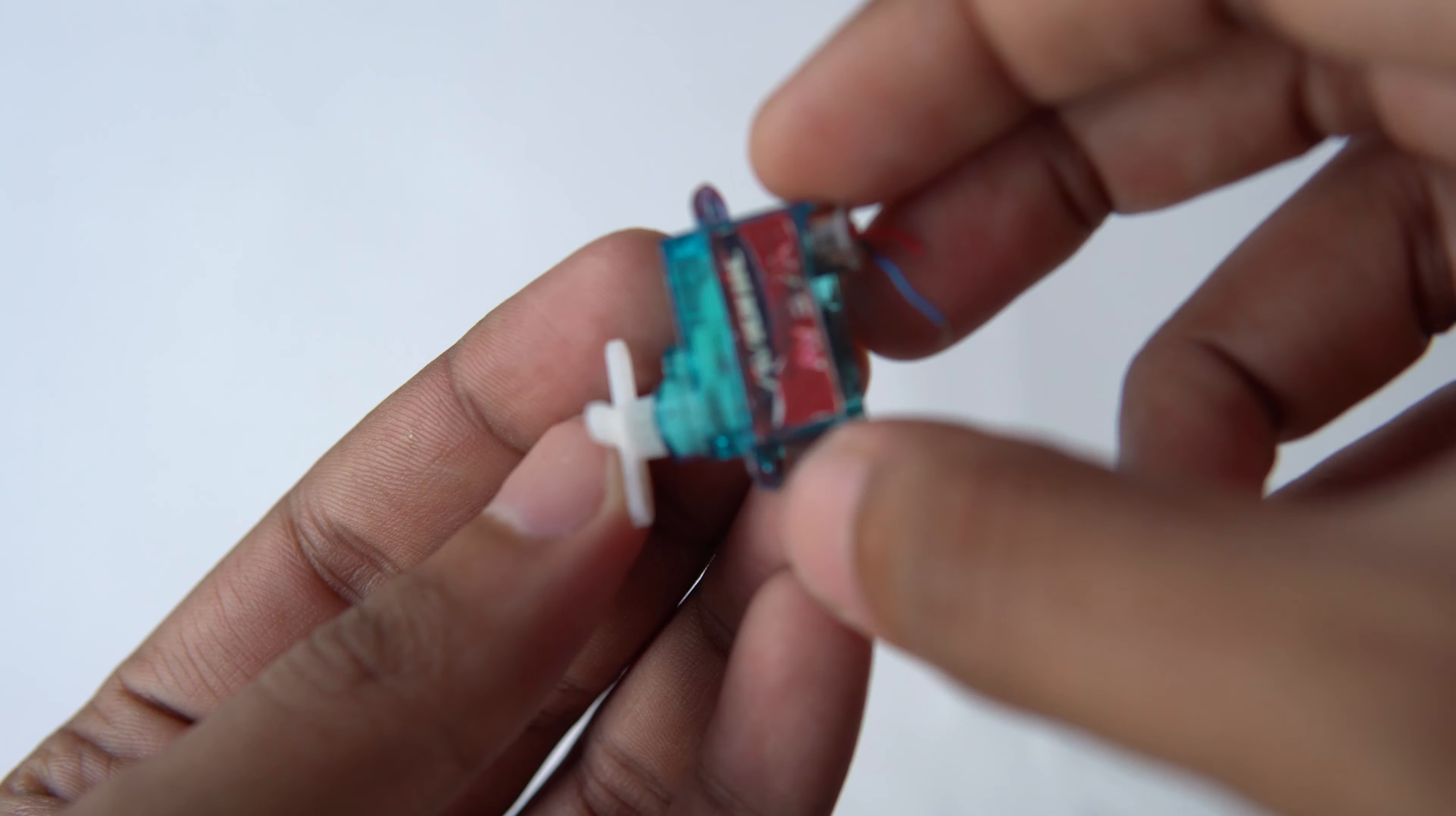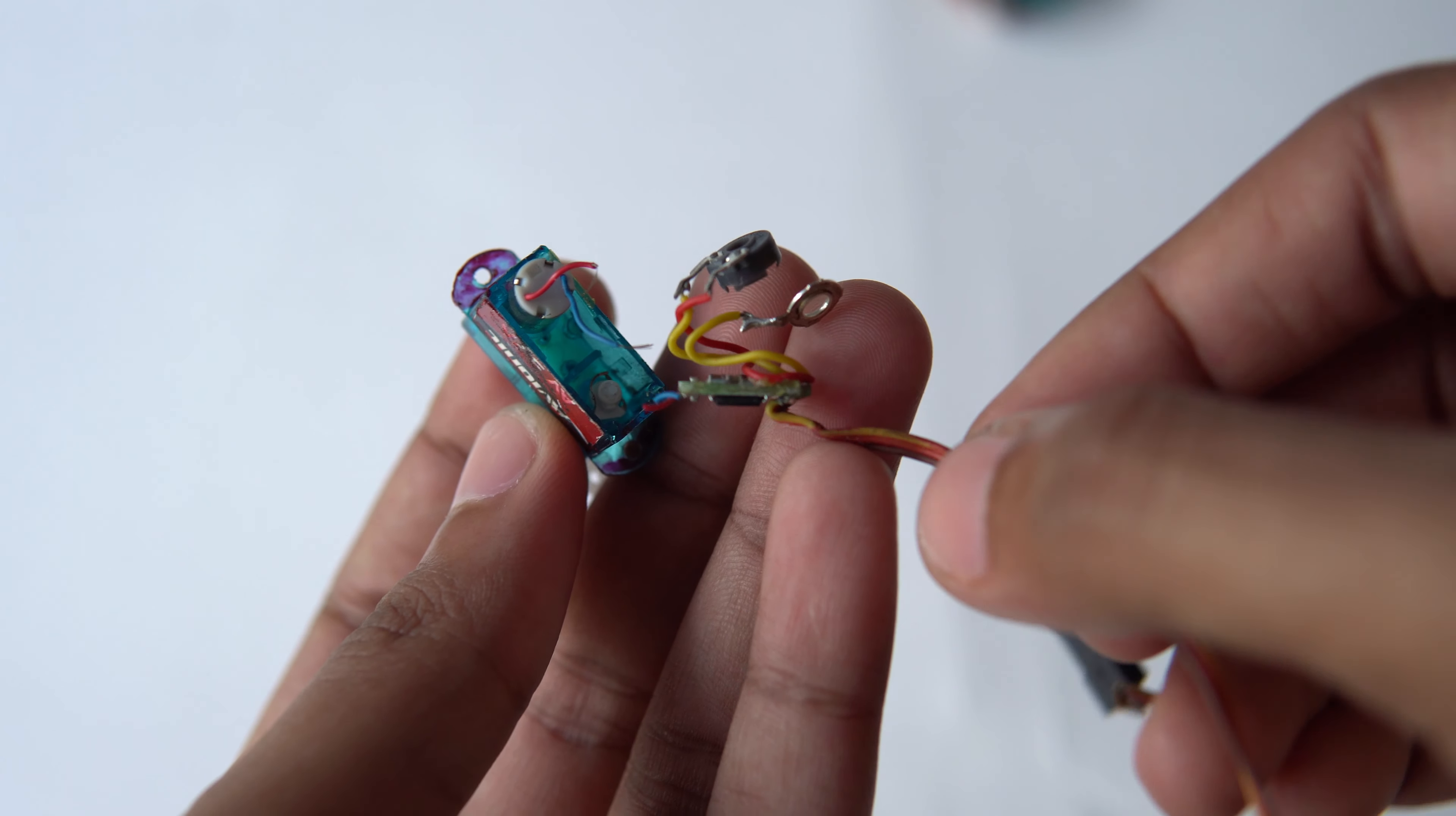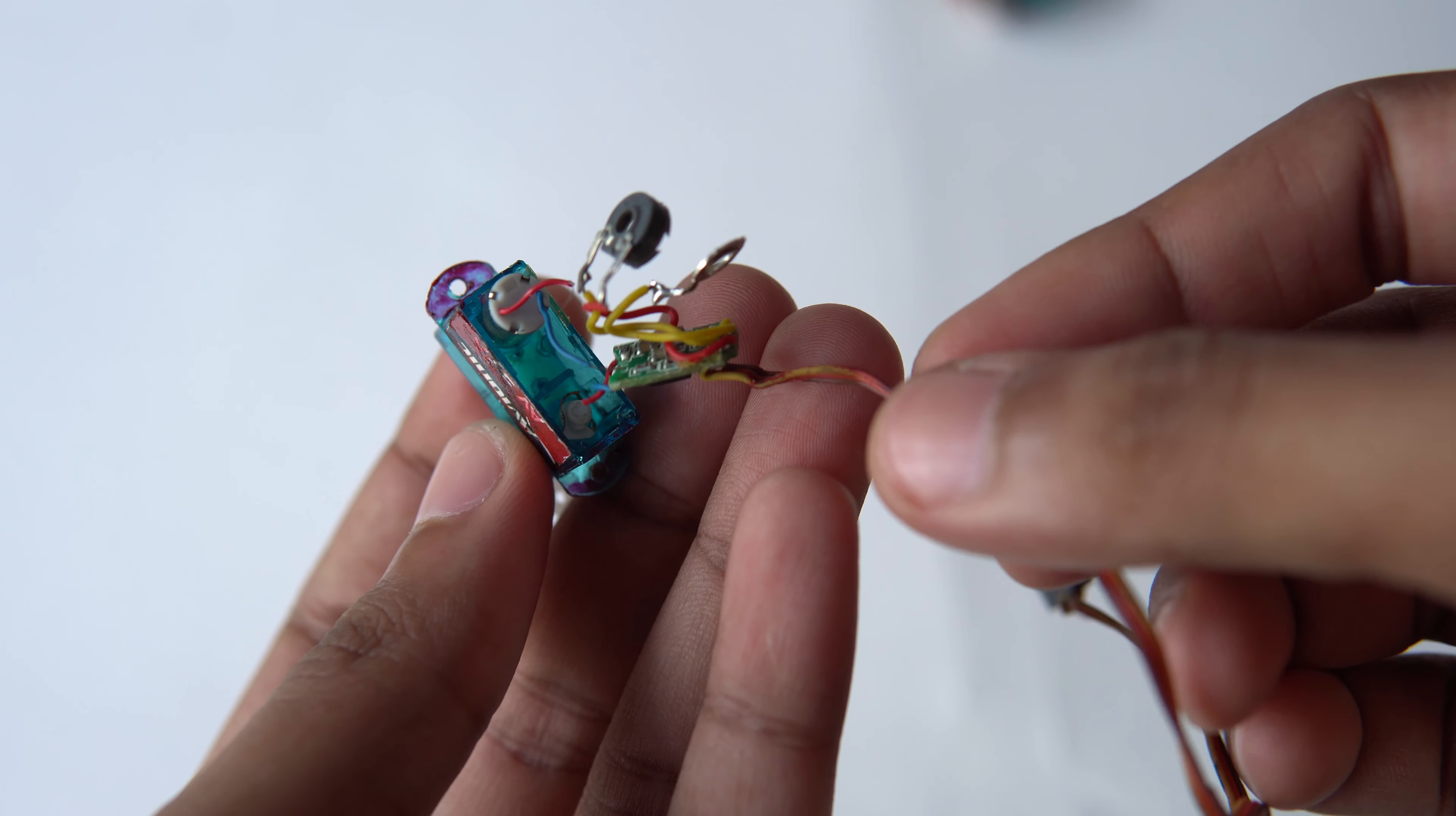When 3 volts is applied to the motor, it will complete a revolution every 1.5 seconds. So I will use this to switch on and off power to the coil.